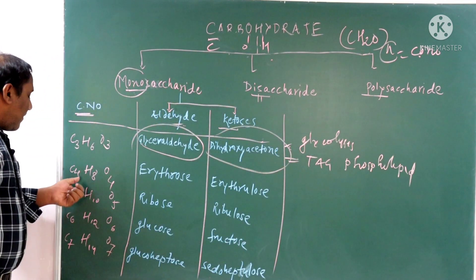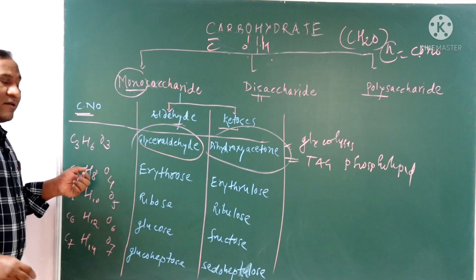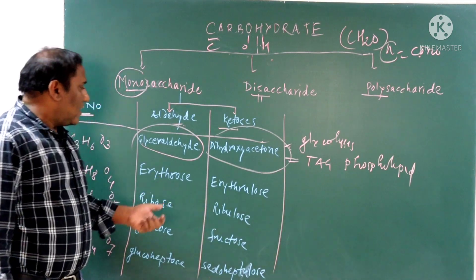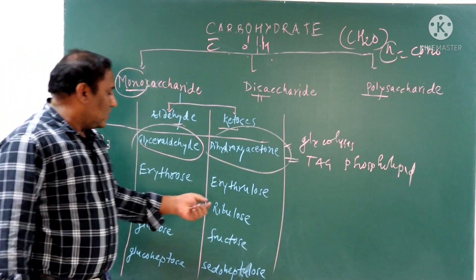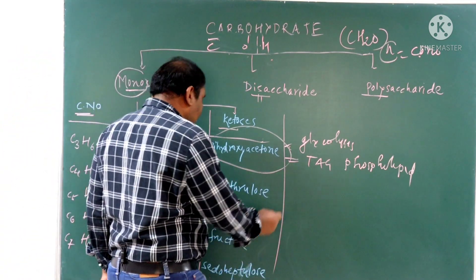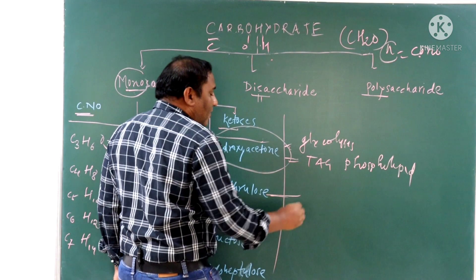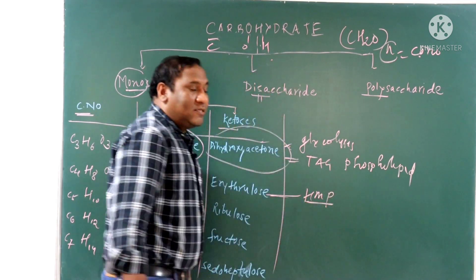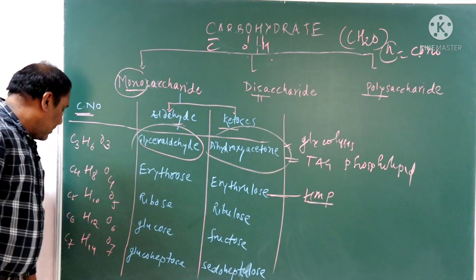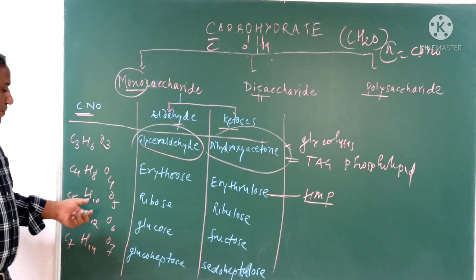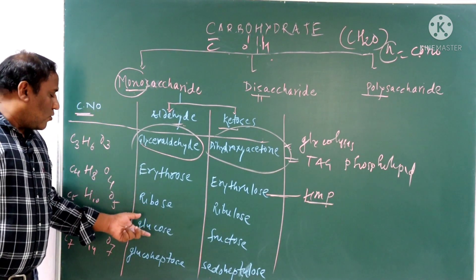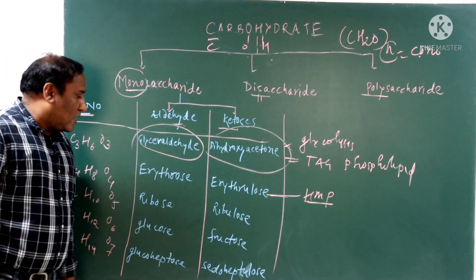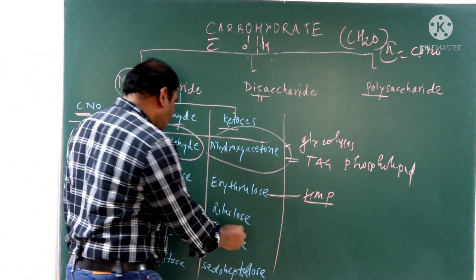If carbon number is four, it is a tetrose. The aldehyde functional group form is known as erythrose, and the ketose form is also called erythrulose. Erythrose is an intermediate metabolite of the HMP pathway (hexose monophosphate pathway). For carbon number five (pentose), the aldehyde form is ribose and the ketose form is ribulose.